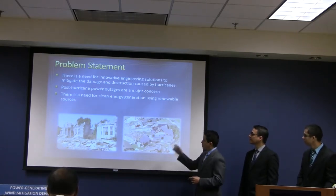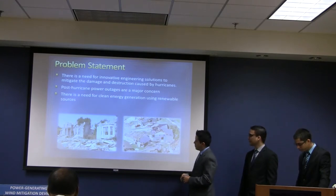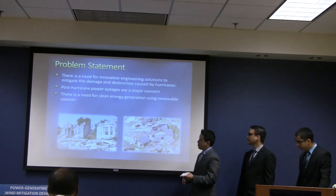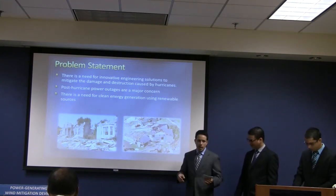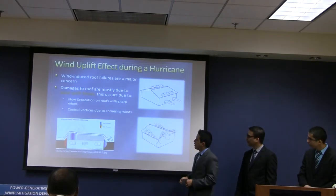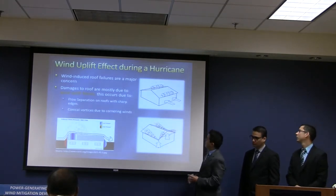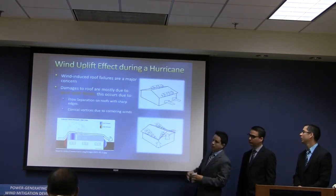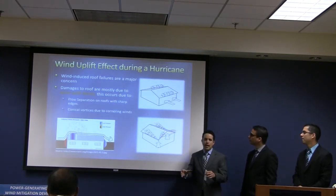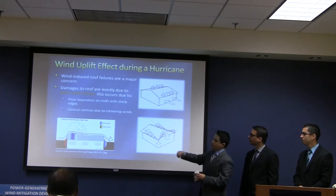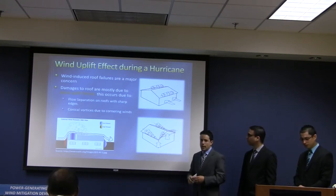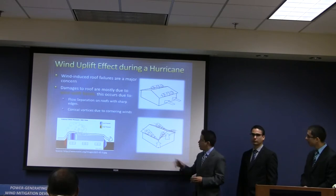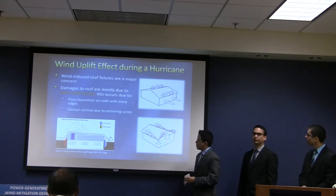I want to direct your attention to these pictures. As you can see, house damage usually starts by roof failure. You can see in this top right picture, these arrows represent the wind striking the house at 90 degrees, and you can see how these vortices are formed on the roof. The same thing here with wind striking the house at an angle — how these cortical vortices are formed.